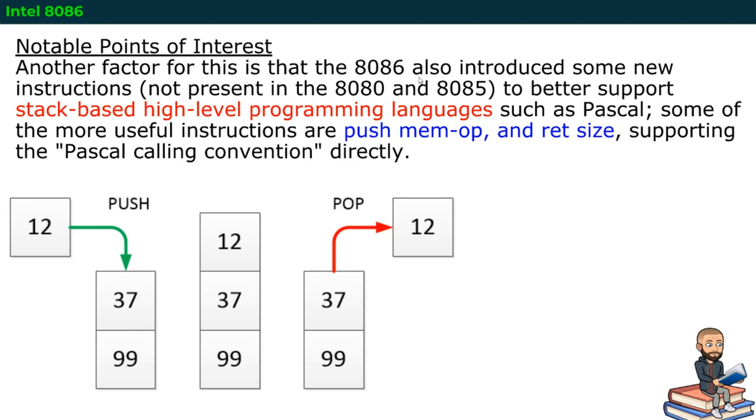Let me focus here, because the 8086 processor had some new instructions, right? New code or new commands. These instructions were not present in the earlier chips. What did these instructions do? They better supported stack-based high-level programming languages, such as Pascal. Some of the more useful instructions are push memory operations and return sizes, supporting the Pascal calling convention directly.